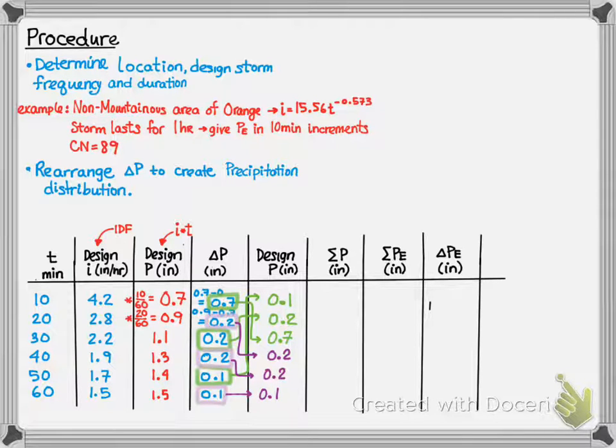By doing this, it gives you a more realistic distribution of the rainfall. Rainfall usually starts off slow, picks up, and then drops off. Occasionally, you will have rainfall that looks similar to the delta P column, but this is very rare. Now, we're going to sum this column back up, and you should note that the bottom value of 1.5 is the same as you had in the original design P column.